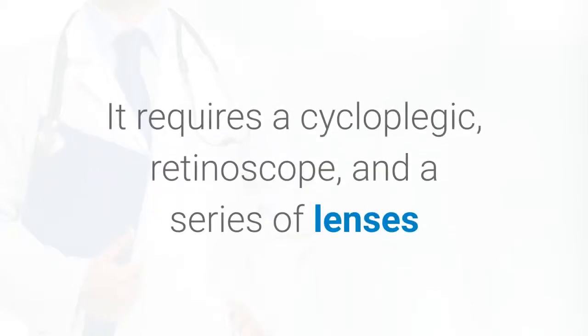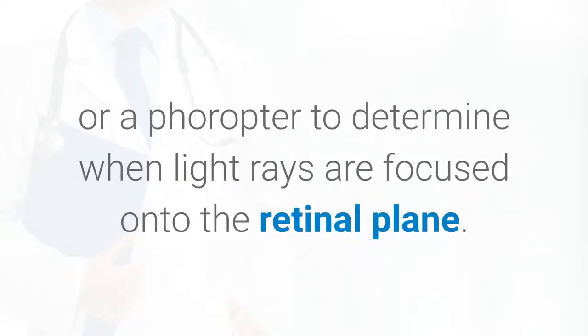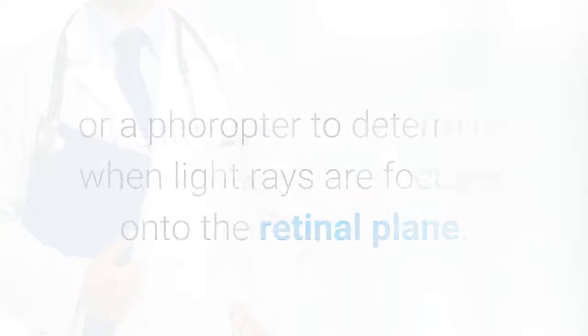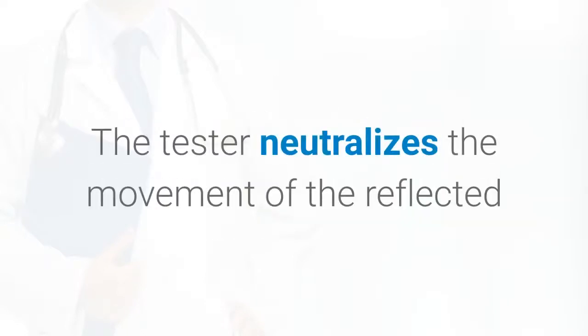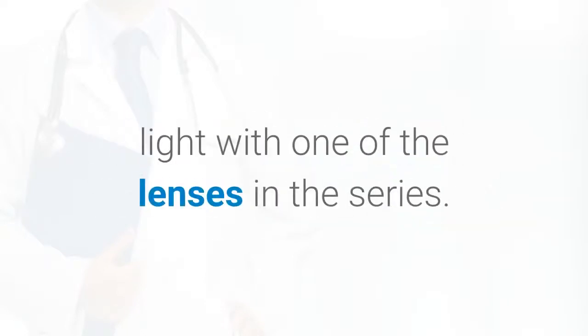Retinoscopy is the method preferred in babies and children. It requires a cycloplegic, retinoscope, and a series of lenses or a phoropter to determine when light rays are focused onto the retinal plane. The tester neutralizes the movement of the reflected light with one of the lenses in the series.